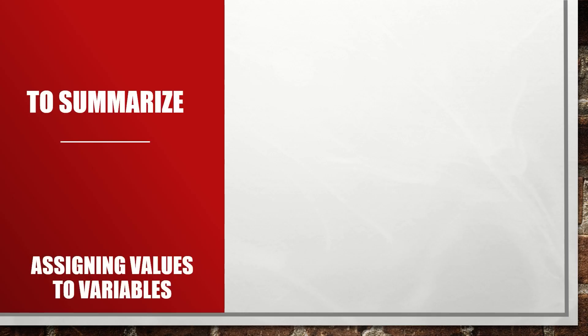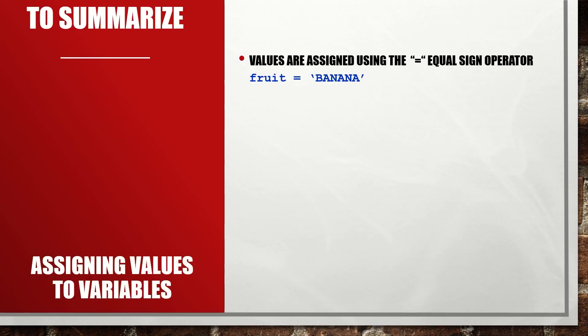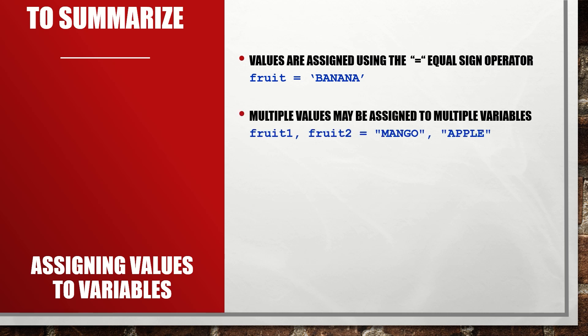To assign values to variables, we use the equal sign operator. For example, we have a variable called 'fruit' and we assign the string 'banana'. We can also assign multiple values to multiple variables — in this case, 'fruit1' and 'fruit2' separated by a comma equals 'mango', 'apple'.